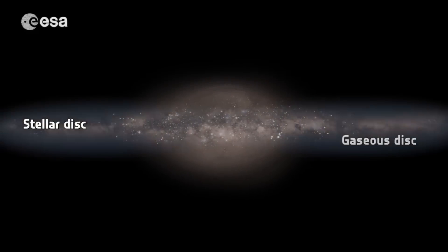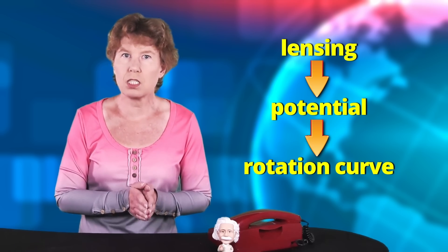From the weak gravitational lensing data, they calculate the effective gravitational potential that would be needed to get the right gravitational lensing, and from that they construct the rotation curve.